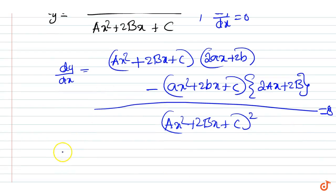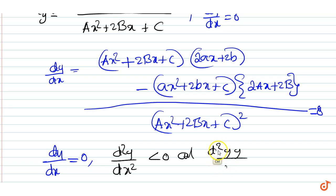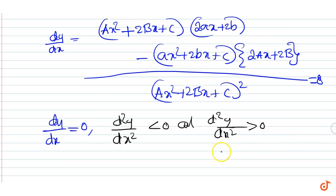The correct option is when dy by dx equal to 0 and d square y by dx square less than 0 or d square y by dx square greater than 0. When d square y by dx square is less than 0, y is maximum. When greater than 0, y is minimum.